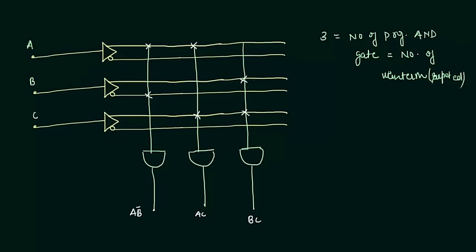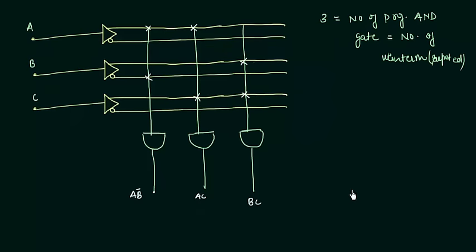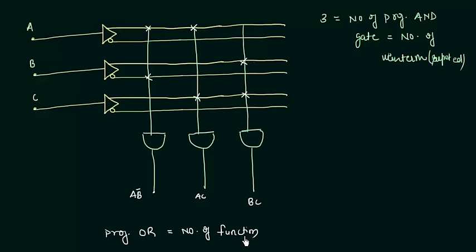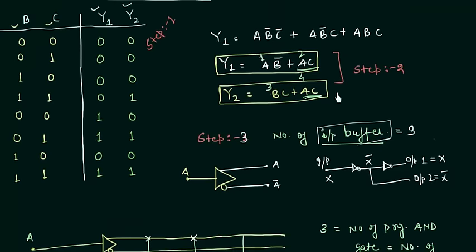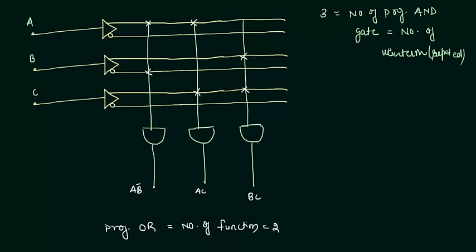Now the next step is to see what to do with the programmable OR gates. The number of programmable OR gates equals the number of output functions. We have Y1 and Y2, so the number of programmable OR gates will be 2. So let's make the programmable OR gates.